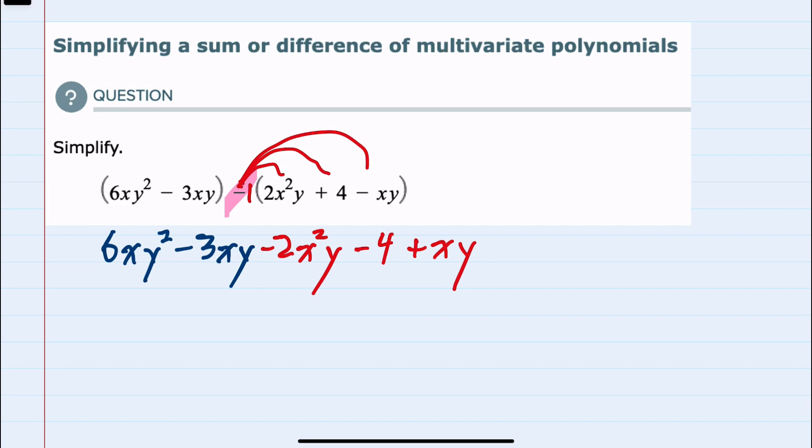And from here we can look for like terms. Our first term is an xy² but that's the only term that has an x and a y². The second term however, the minus 3xy, I can see that there's a plus 1xy. Those can be combined. Minus 3xy plus 1xy would give us a minus 2xy.